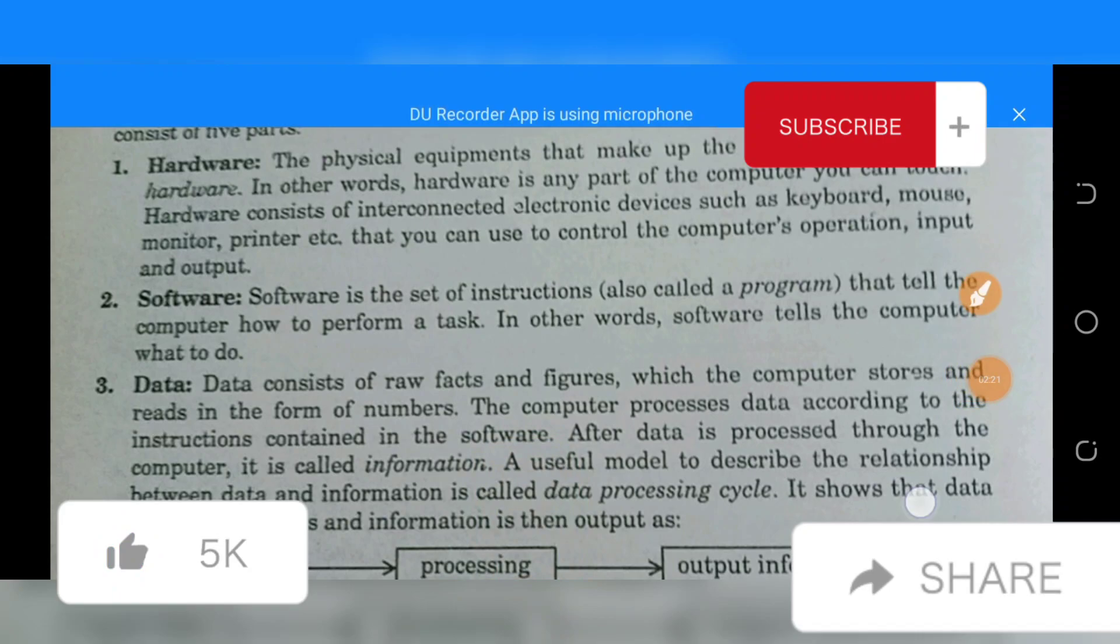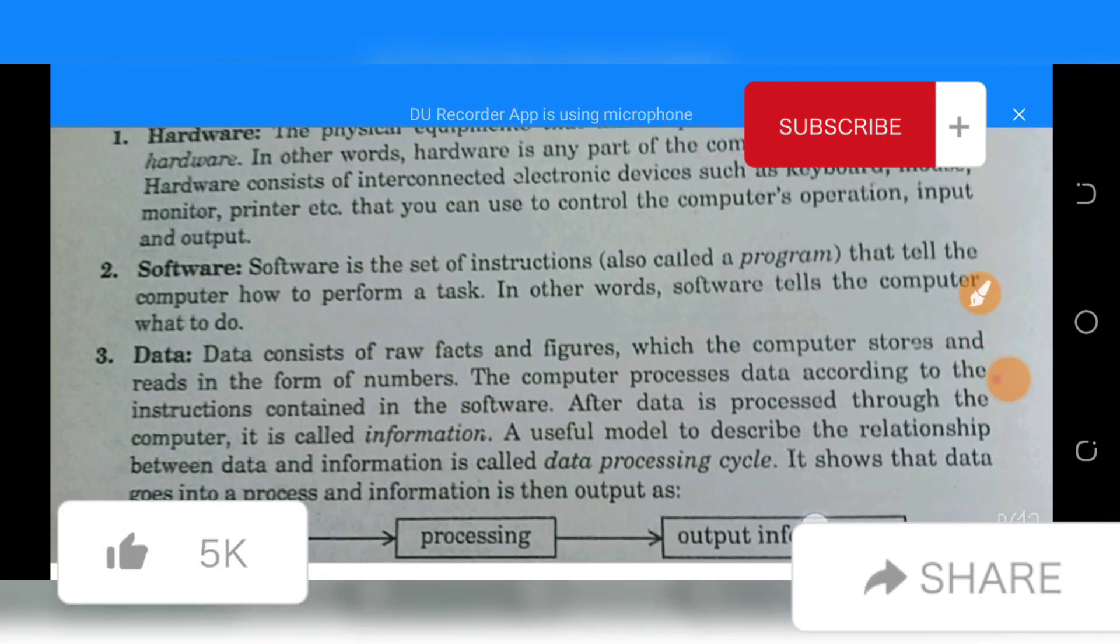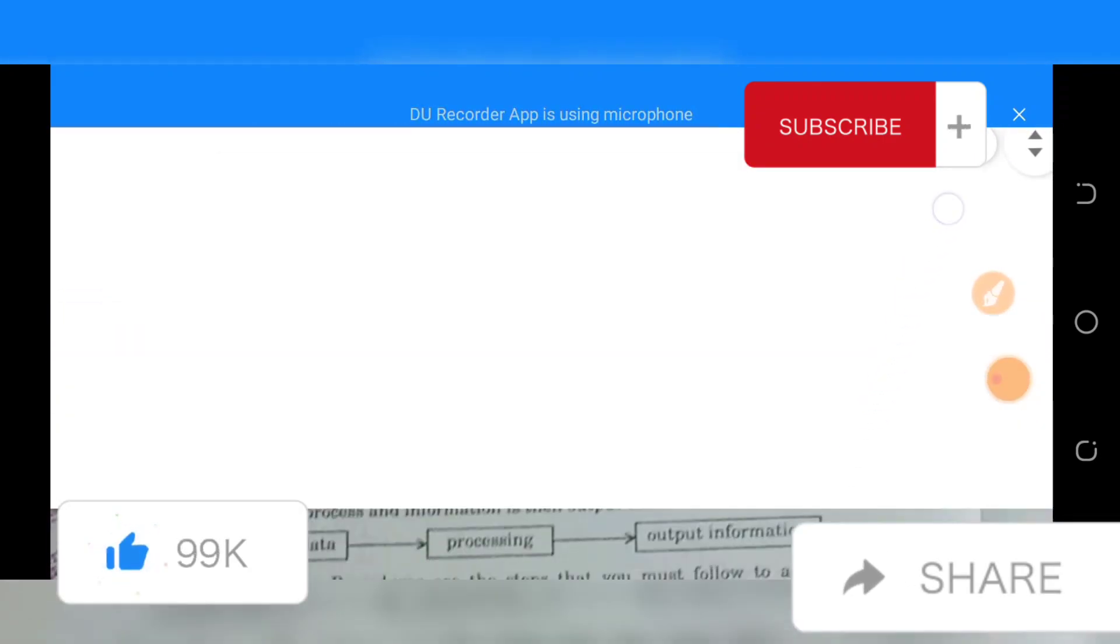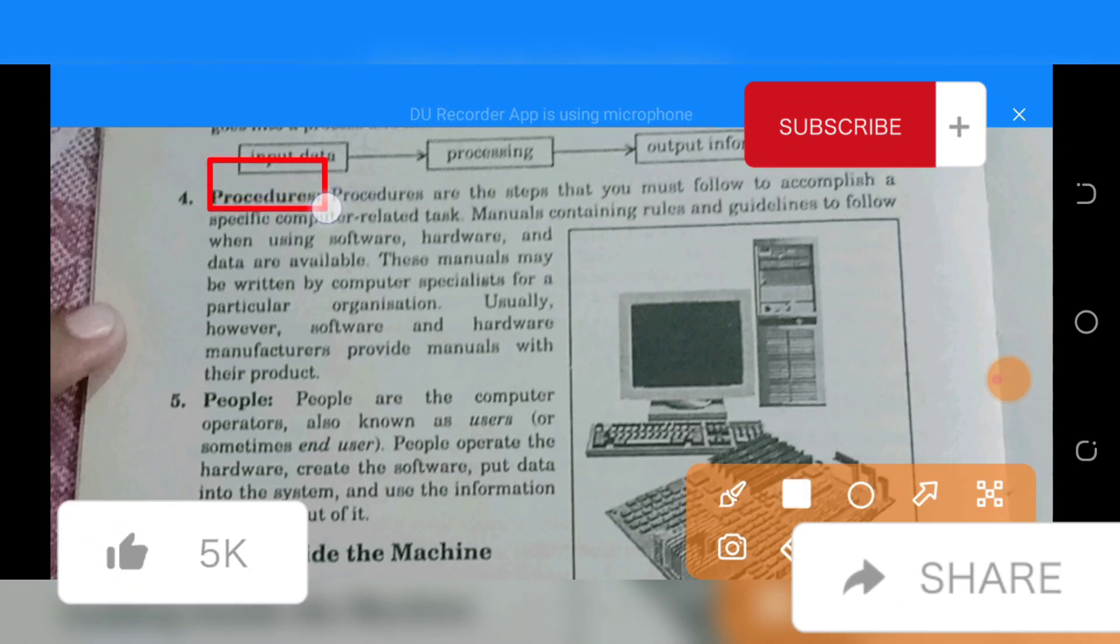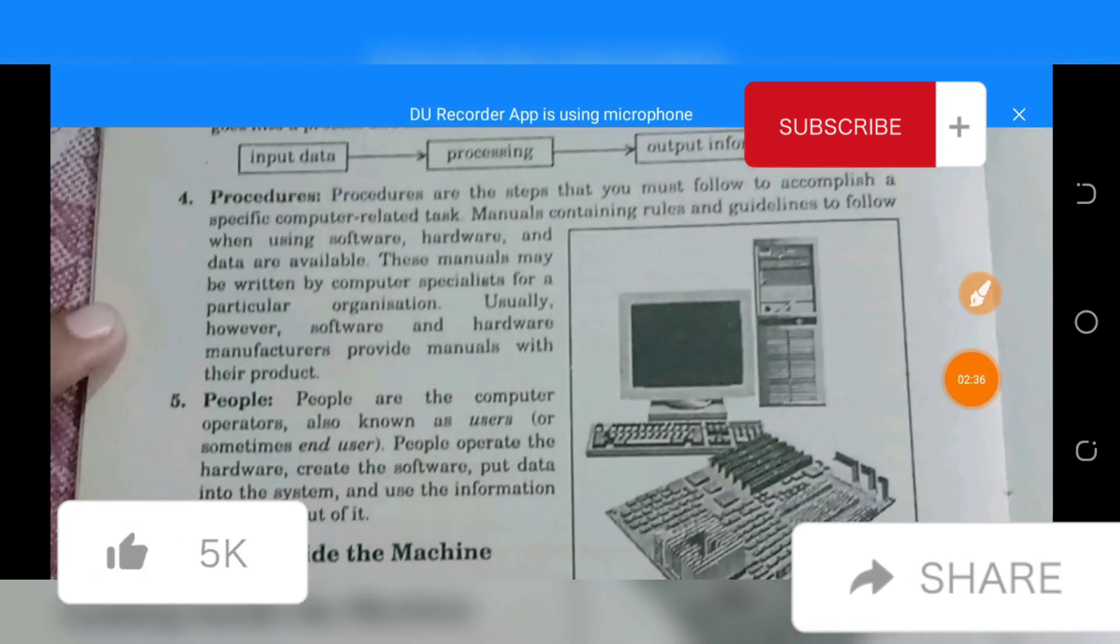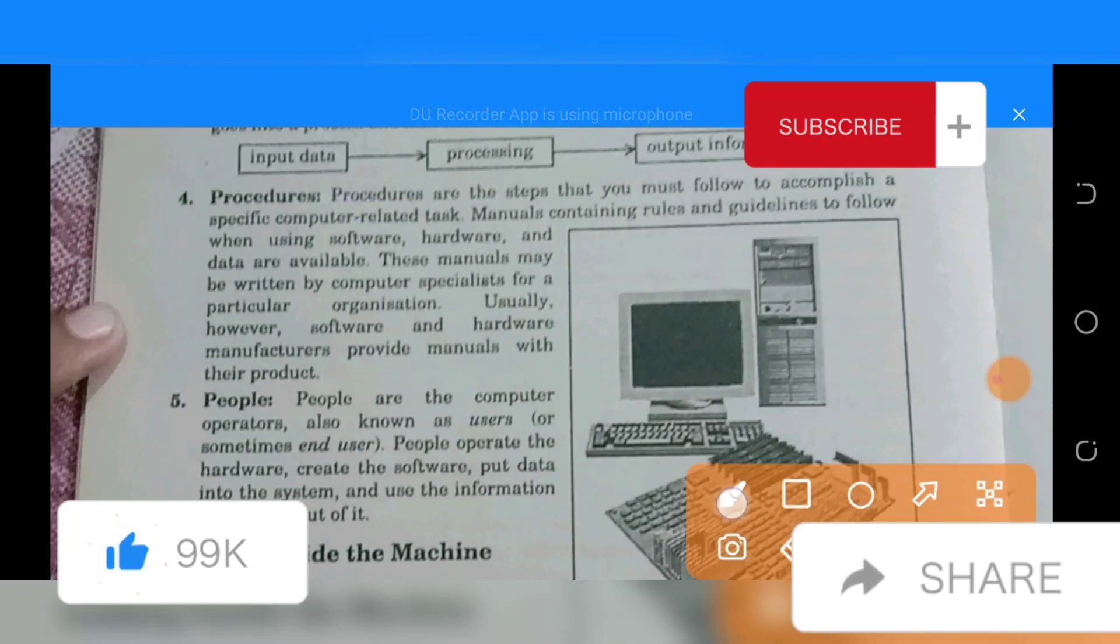Now we will talk about procedures. Procedures are the steps that you must follow to accomplish a specific computer-related task. They are manuals containing rules and guidelines to follow when using software, hardware, and data.